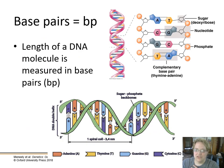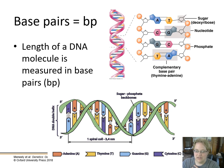Base pairs (bp) are the unit of DNA length — how many pairs are present. In a given picture, there might be eight nucleotides but only four base pairs. That's what we're concerned with: how many base pairs long a section of DNA is. In one coil of the double helix, for example, there are about nine base pairs.